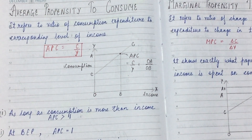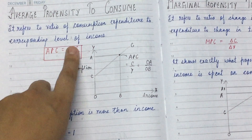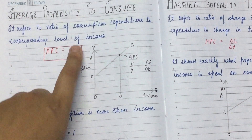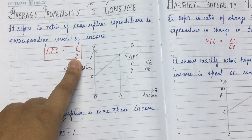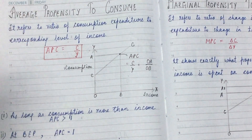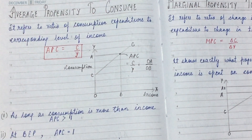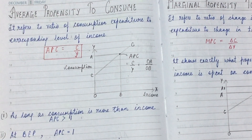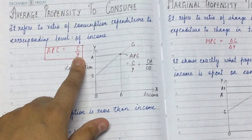APC — Average Propensity to Consume — has a formula: C upon Y, meaning consumption upon income. This is the formula for Average Propensity to Consume. You can express it as a ratio or as a percentage.